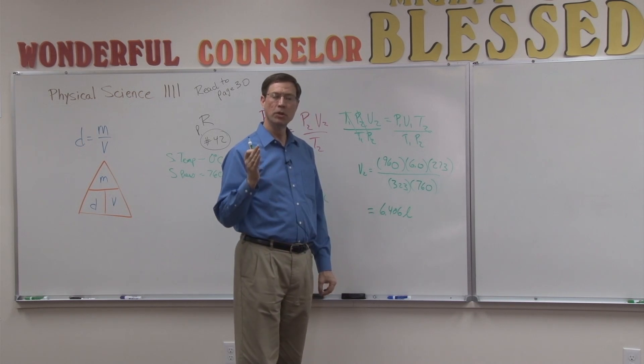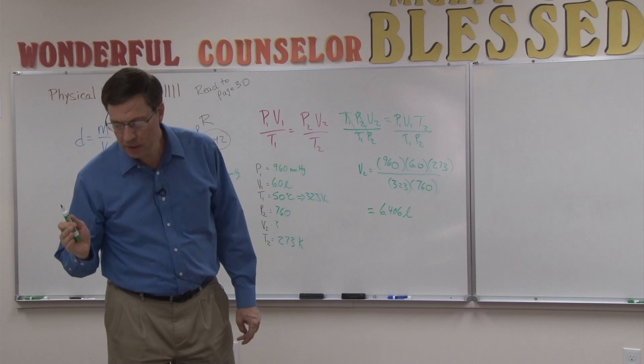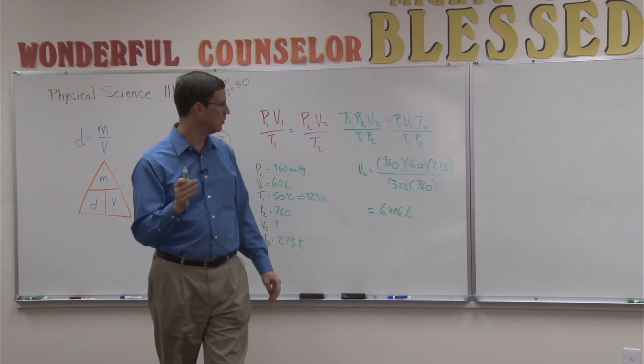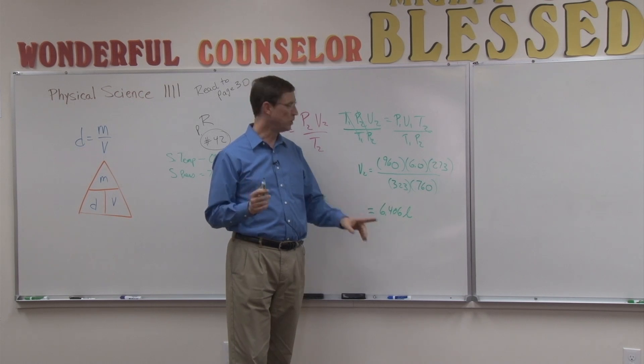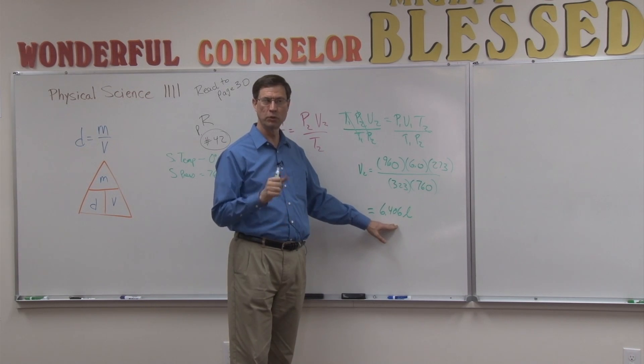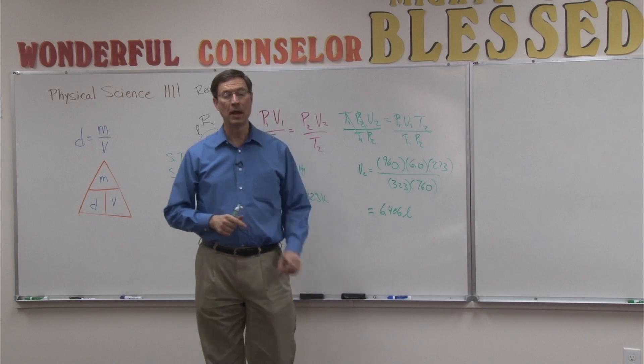Now, you'll notice when you go to score that the answer says that it's 6.41 liters. And you say, but I got 6.406. Remember, that has to do with significant digits. If you got this for your answer, you're good. All right? We're not going to take the time to review the rules for significant figures, but that's why the bold answer is 6.41.